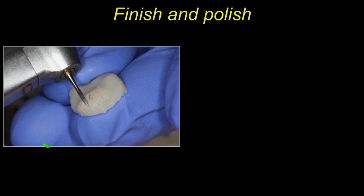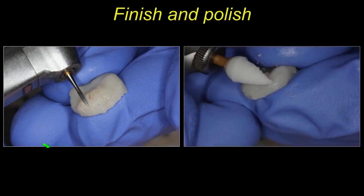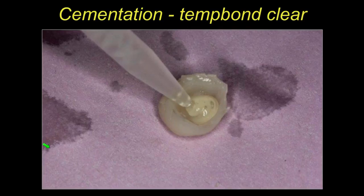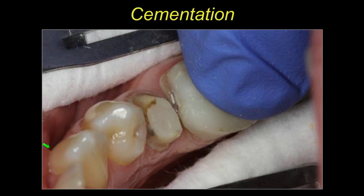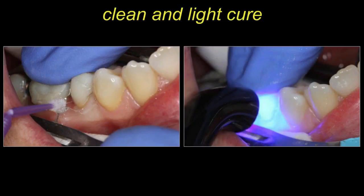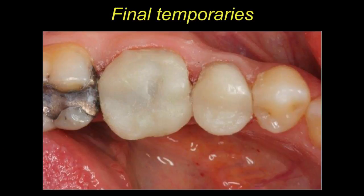I'll trim excess with a multi-fluted carbide bur, then polish with an enhanced polisher. Once it's in, I'll try it in, check the occlusion, then use Temp-On Clear to cement it, removing excess with a micro brush. Make sure you get rid of all the Temp-On Clear — it tastes terrible if any residue remains. Patients will come back the next day complaining of a horrible taste. It works well but you've got to get rid of it completely.